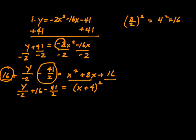Now, we have to have common denominators, so we need a common denominator of 2. 16 times 2 is going to be 32. So it's 32 over 2 minus 41 over 2 equals x plus 4 squared.